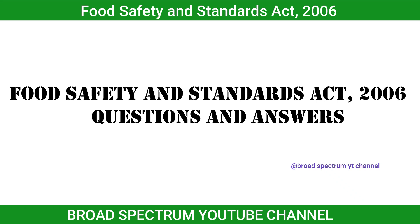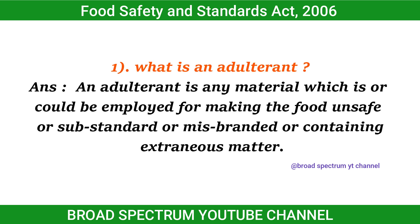Food Safety and Standards Act, 2006 — Questions and Answers. Let us look at some descriptive type questions to understand the act better. Question 1: What is an adulterant? An adulterant is any material which is or could be employed for making the food unsafe or substandard or misbranded or containing extraneous matter.